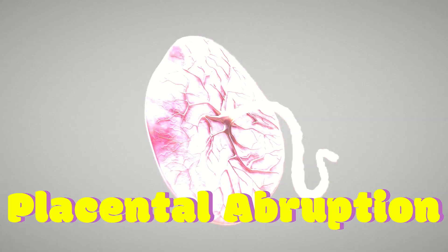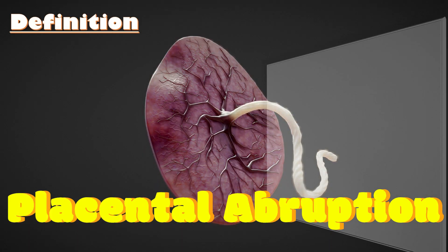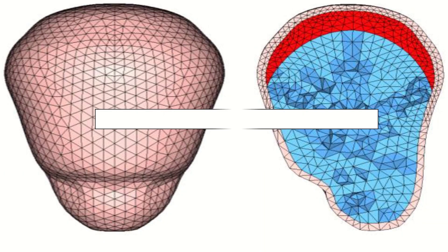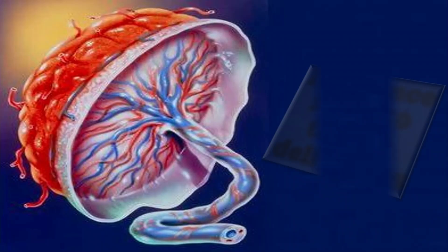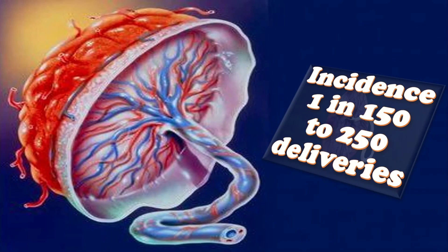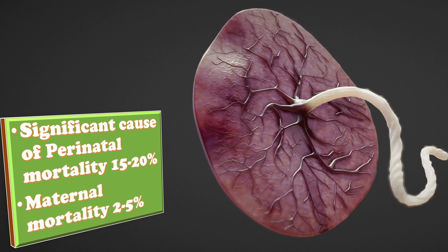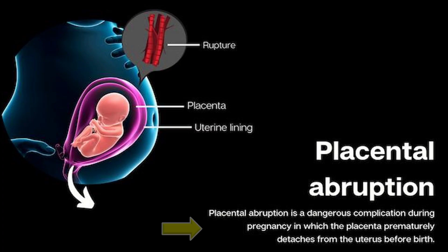Abruptive placenta, or placental abruption, is a premature separation of a normally located placenta after 22 weeks of gestation, when it is more than 500 grams, and prior to the delivery of the fetus. Abruption means breaking away. Its incidence is 1 in 150 to 250 deliveries. Placental abruption is a significant cause of perinatal mortality in 15 to 20 percent of cases, and it causes maternal mortality in 2 to 5 percent of cases. It is a dangerous complication during pregnancy in which the placenta prematurely detaches from the uterus before birth.